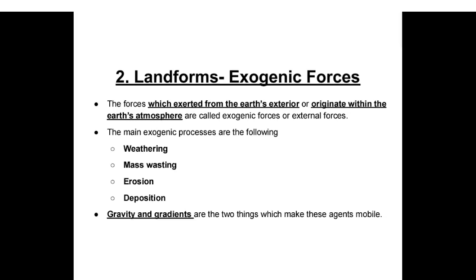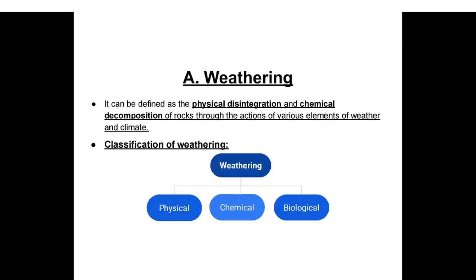Forces exerted from the earth's exterior or acting within the earth's atmosphere are called exogenic forces or external forces. The main exogenic processes are: weathering, mass wasting, erosion, and deposition. Gravity and gradients make these agents mobile. Stress is produced in a solid by pushing or pulling; gravitational force acts upon all earth materials on sloping surfaces and tends to produce movement of matter in the downslope direction. Weathering can be defined as physical disintegration and chemical decomposition of rocks through the actions of various elements of weather and climate.